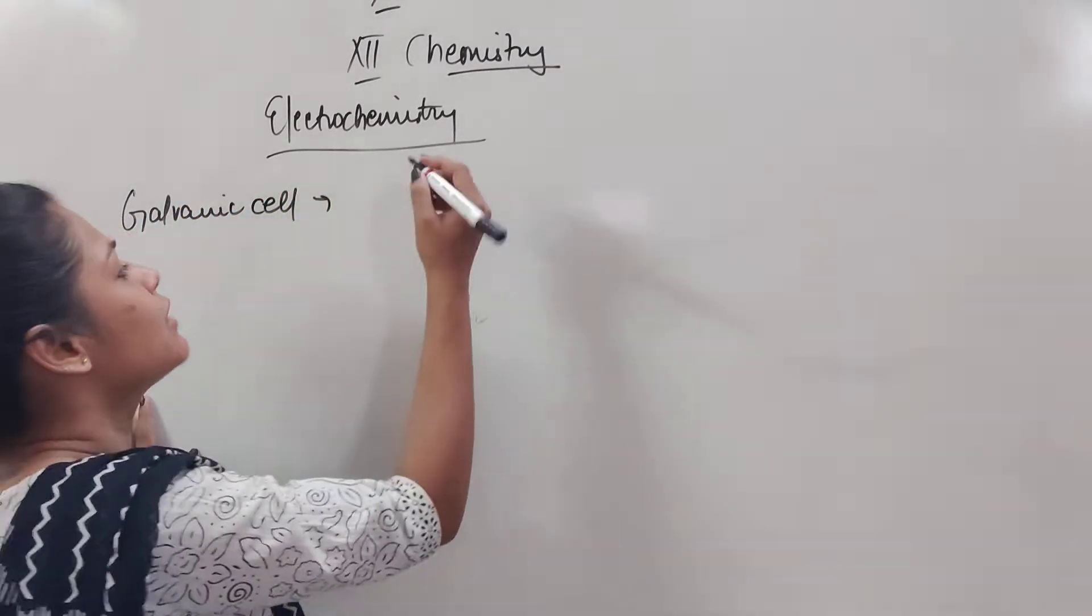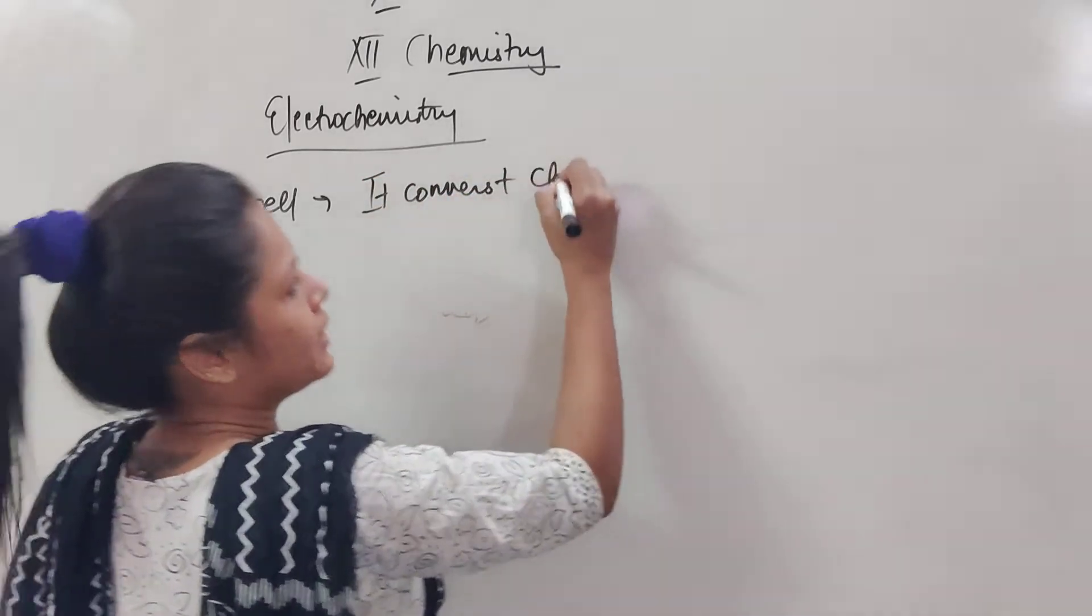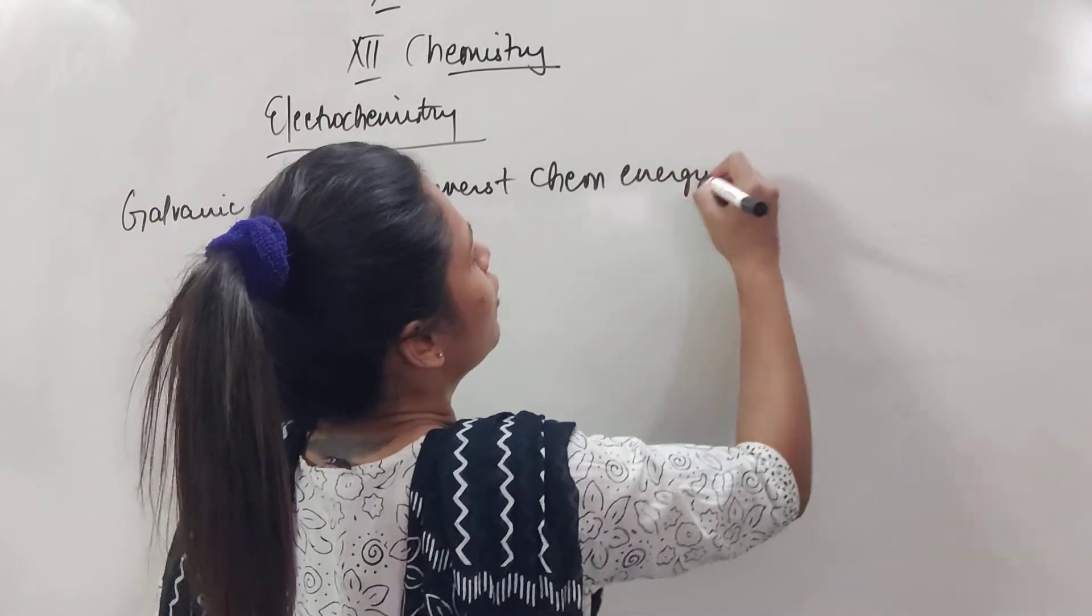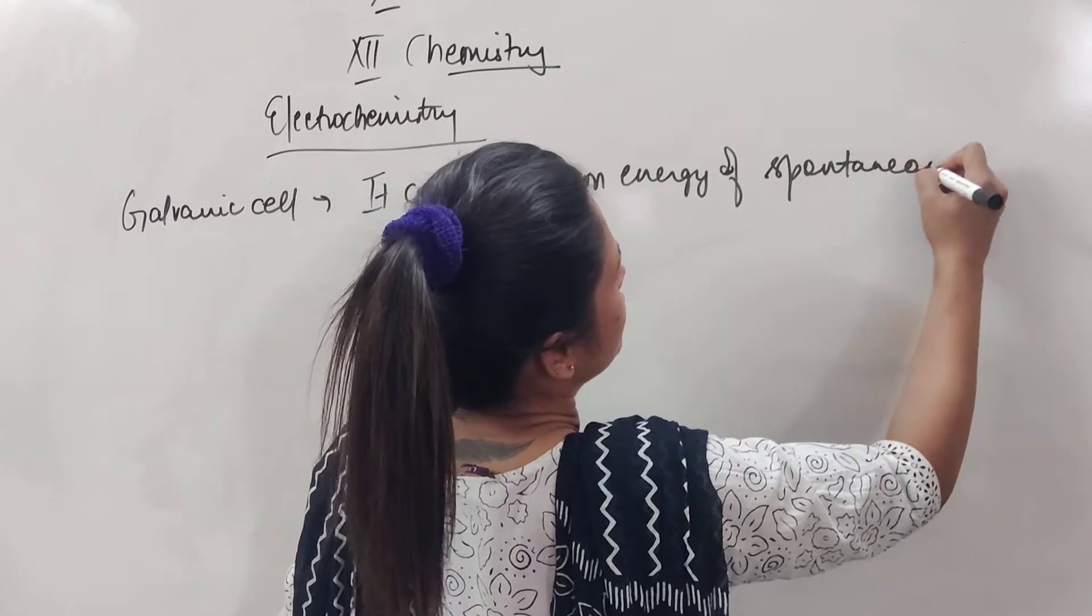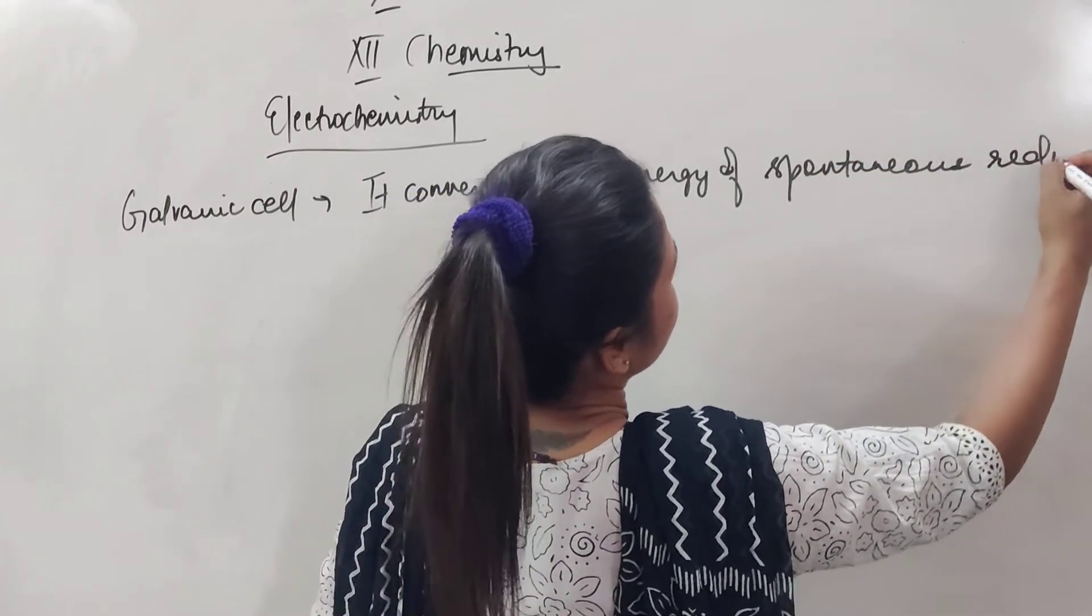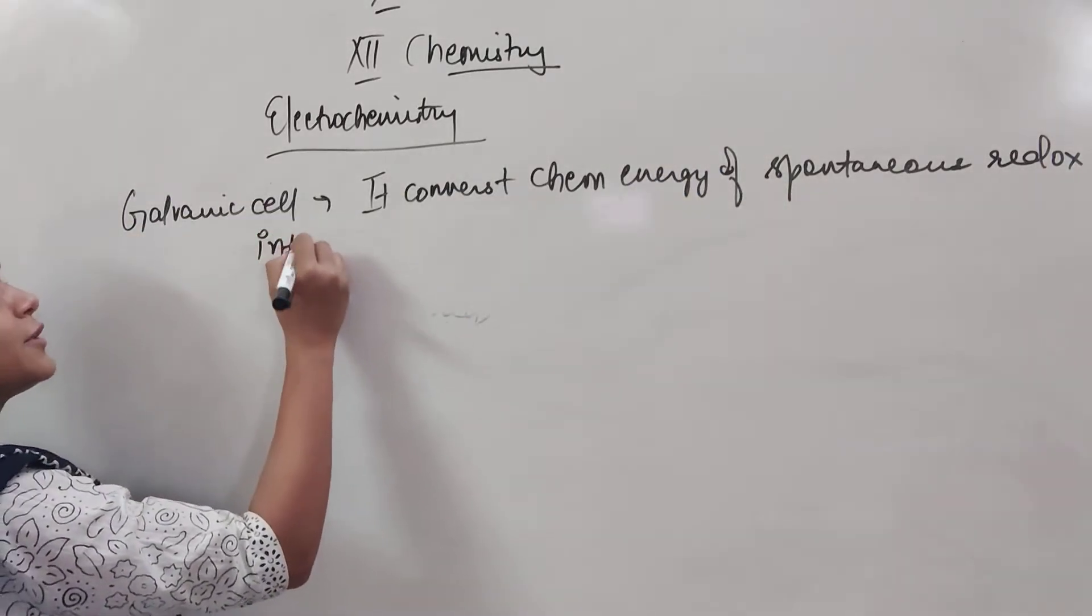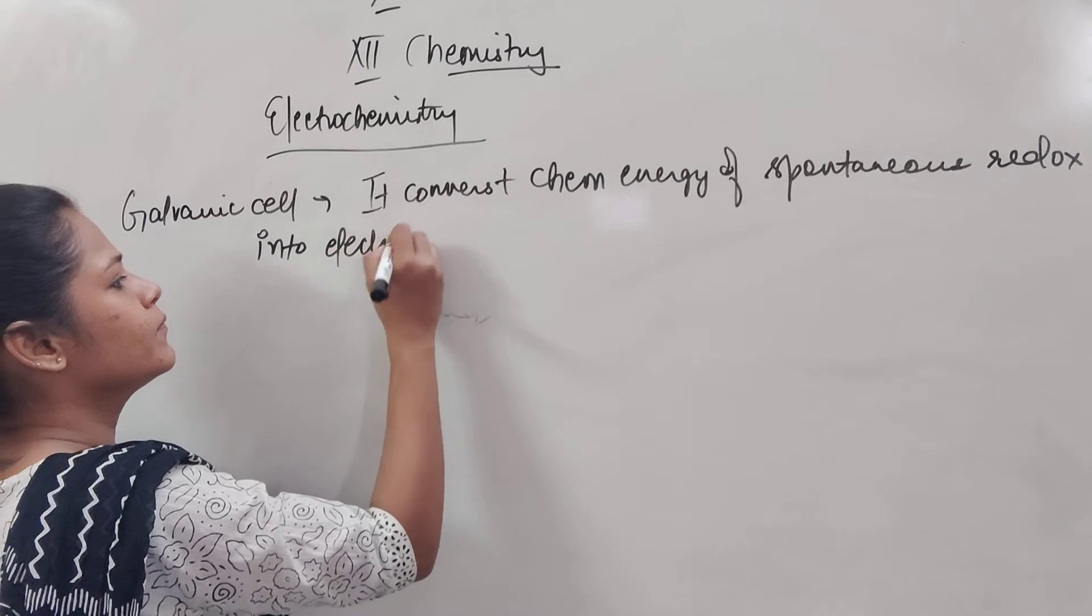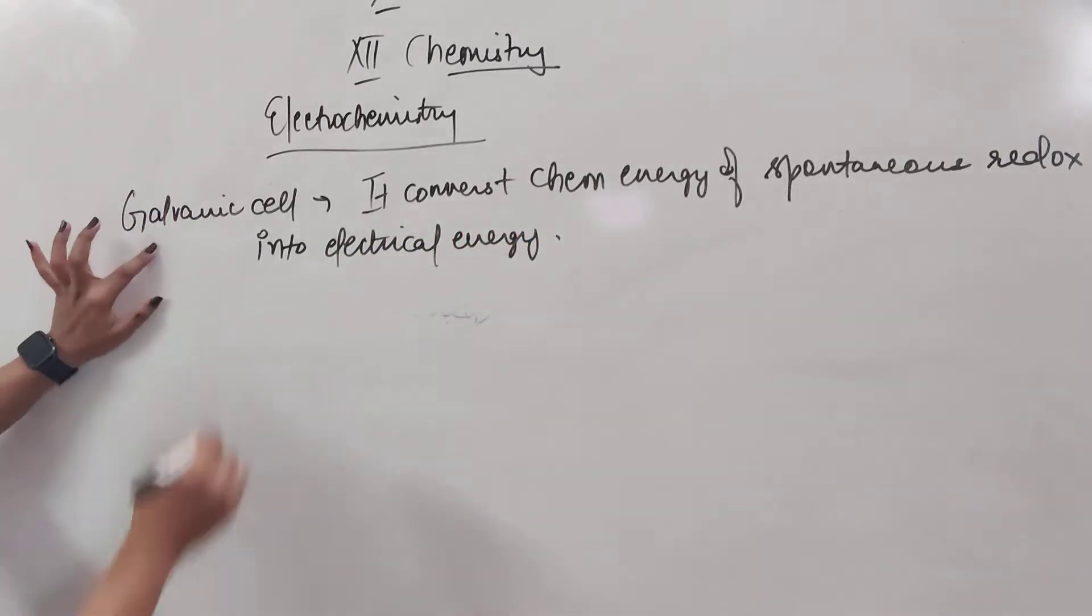This is the cell which converts chemical energy of spontaneous redox reaction into electrical energy. In that galvanic cell the voltage is fixed, if the voltage is not fixed then it can be named as galvanic cell as well.